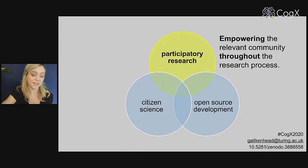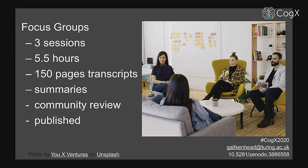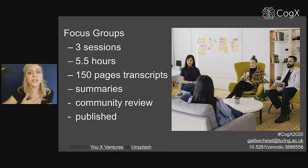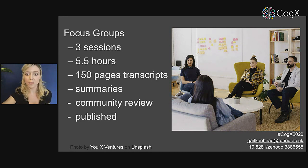Participatory research is about empowering the relevant community throughout the research process. To design the platform at the beginning, we had lots of co-creation focus group sessions. Since the scoping phase, we've done three sessions — each 5.5 hours long — with full transcripts. We summarized the transcripts and found emergent themes coming from the discussions themselves rather than being imposed beforehand by researchers. These all went through an extensive community review process before they were published, and are now available online at our GitHub repository.